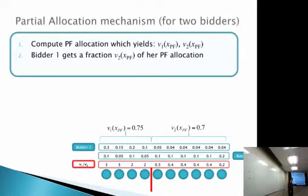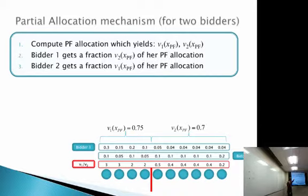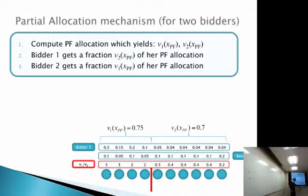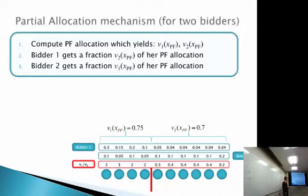Here is the two-bidder mechanism: step one, compute the proportionally fair solution, which yields unique bidder valuations v1 and v2. Then, bidder one gets a fraction v2 of their PF allocation, and bidder two gets a fraction v1 of their PF allocation. So what each bidder receives depends on how happy the other person is — this is clearly non-dictatorial. The key insight is that if bidder one lies to get a bigger bundle, he hurts bidder two, so v2 decreases, meaning he gets a smaller fraction of that bigger bundle — the effects perfectly balance out.